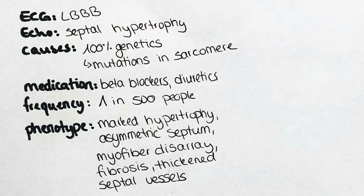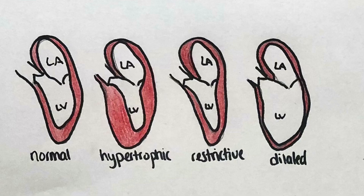It is treated with beta-blockers and diuretics; however, a cure is not possible in any type of the cardiomyopathies. Pathologically, the heart presents with a marked hypertrophy and an asymmetrically thick septum. Histologically, we can observe myofiber disarray — the muscle fibers are not aligned properly but appear disorganized — and also fibrosis and thickened septal vessels. In the bottom of the poster you can see the hypertrophy of the cardiac wall and the resulting decrease in the size of the chamber.